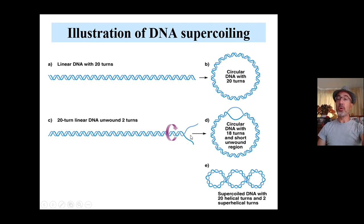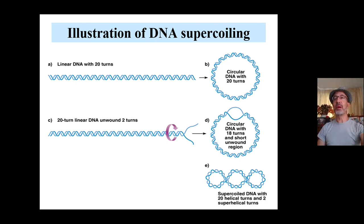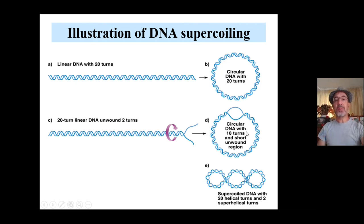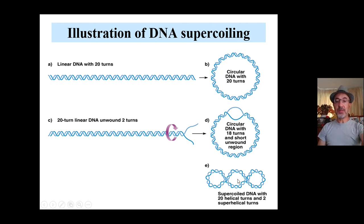What you have done below is that you removed two turns by unwinding, and then connected the ends. You generated a circular DNA molecule, but instead of 20 turns, you now have 18 turns, and you can see the unwound region — what we call the bubble. To restore the stacking properties of DNA and hydrogen bonding, this molecule will twist in the opposite orientation to generate what we call a superhelix, restoring hydrogen bonding between the two separated strands. In this molecule you can count 20 helical turns, exactly as for the relaxed DNA molecule, but with two additional superhelical turns — two negative supercoils.